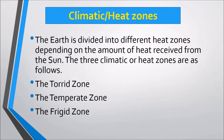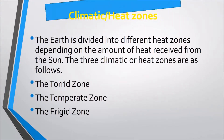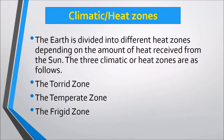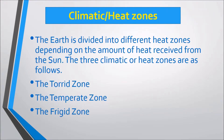Next is the climatic or heat zone. The Earth is divided into different heat zones depending on the amount of heat received from the sun. The three climatic or heat zones are: the Torrid Zone, the Temperate Zone, and the Frigid Zone.